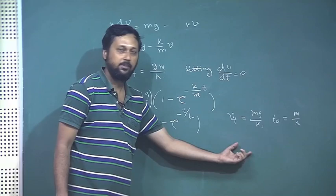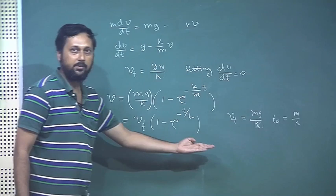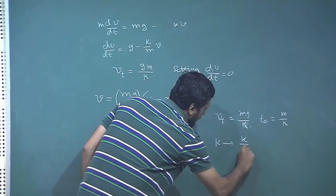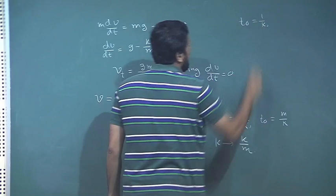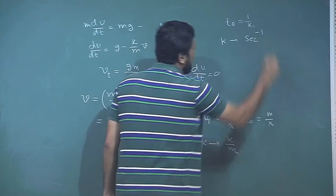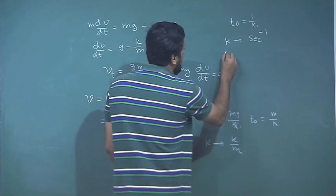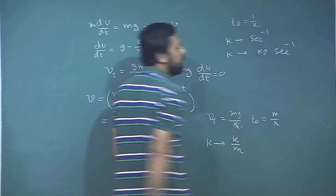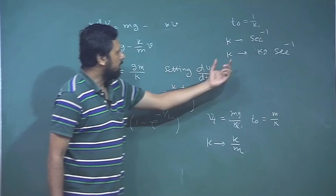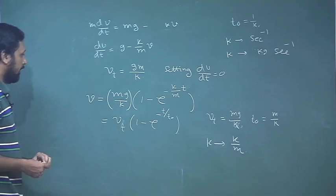It is the same result as from the previous set of equations, only k is replaced by k/m. Note that when t_0 = 1/k, the unit of k is second inverse; when t_0 = m/k, the unit of k is kg per second. Depending on whether data is given in s⁻¹ or kg·s⁻¹, we have to use one of these two equations accordingly.